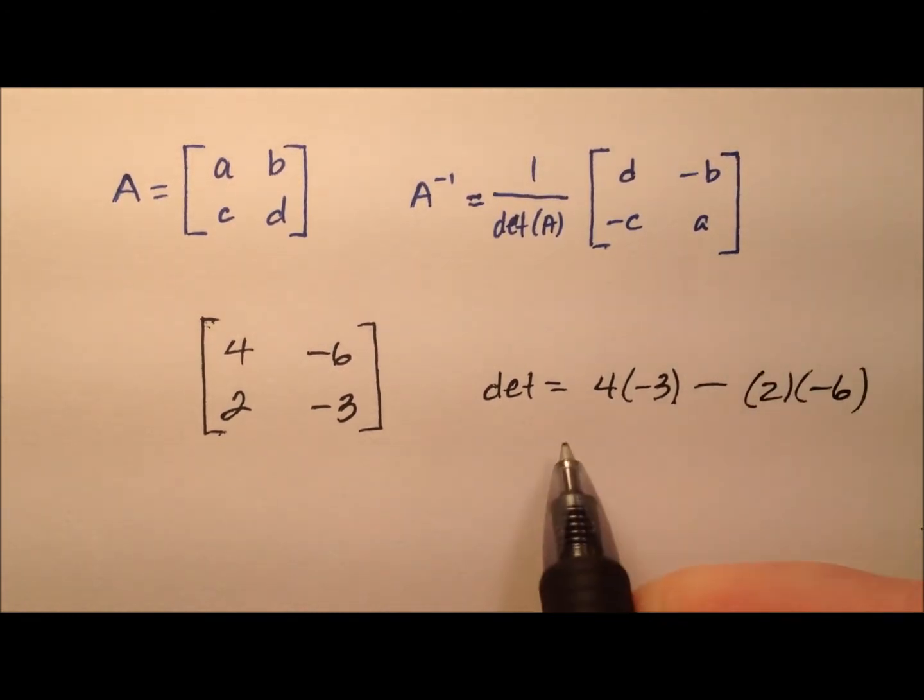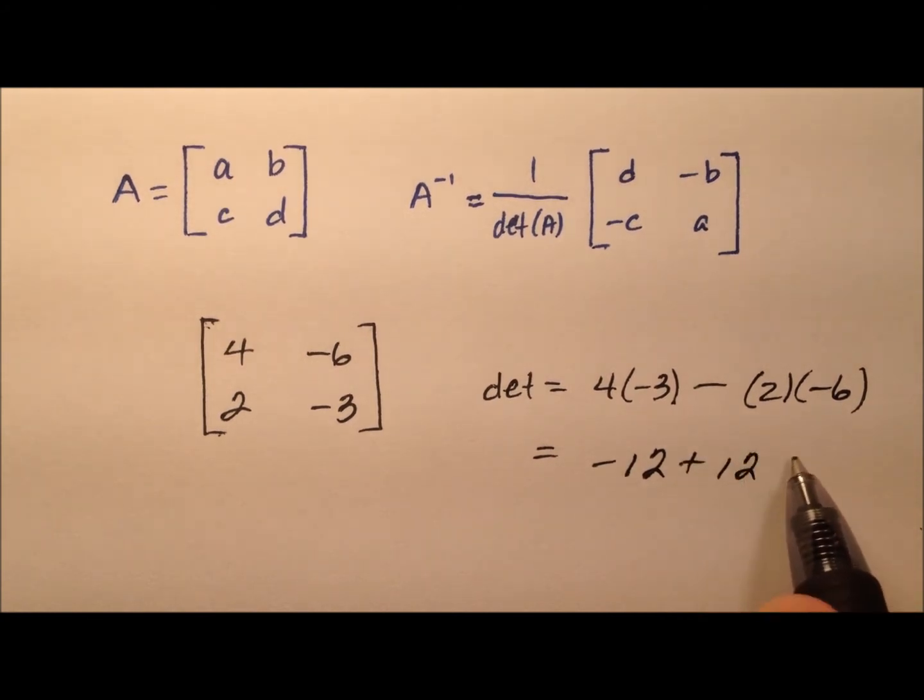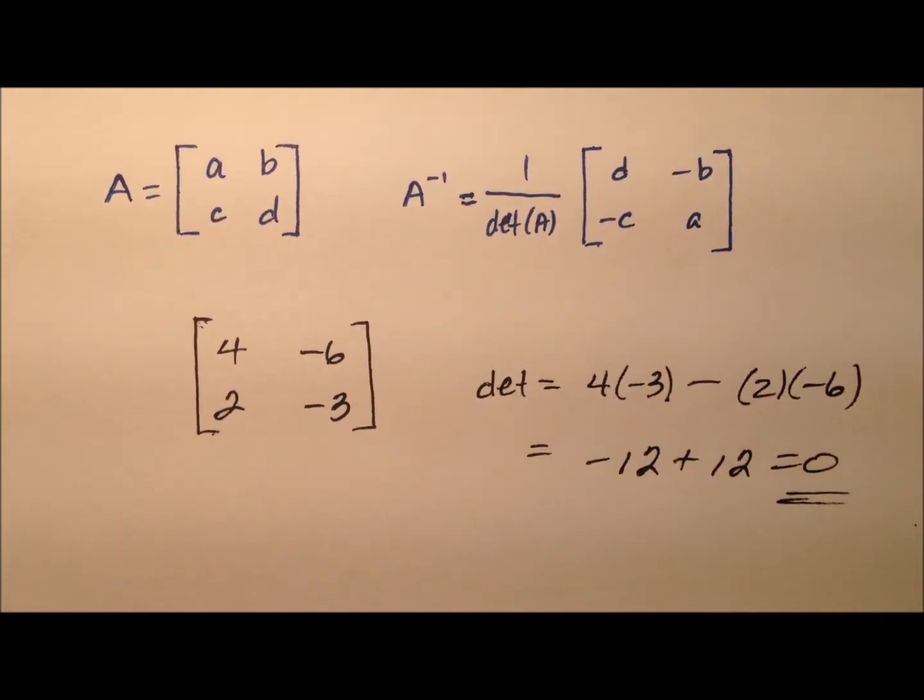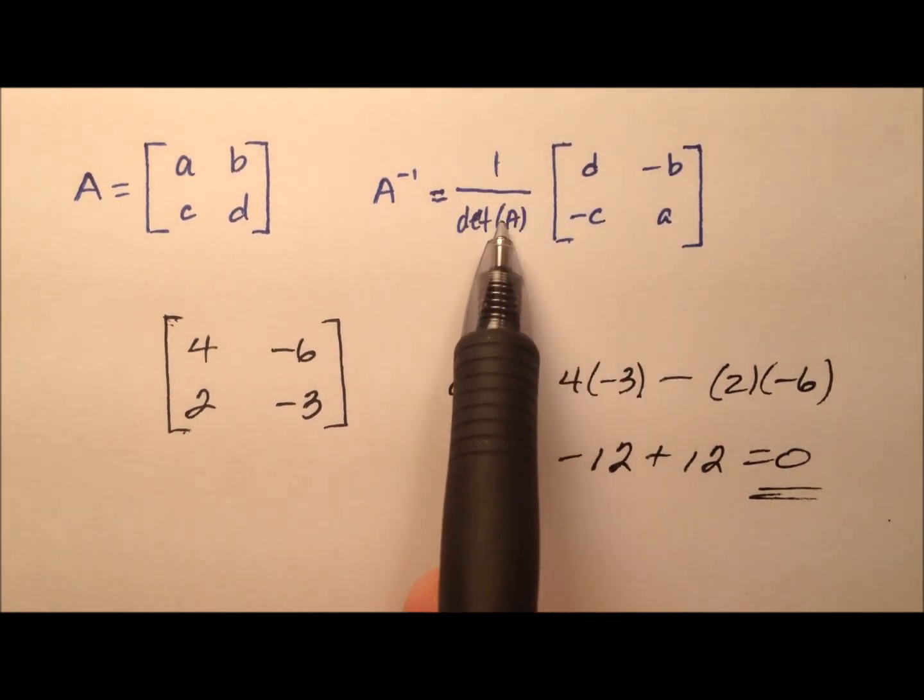So 2 times negative 6. And we'll see negative 12 plus 12 equals, uh oh, we have a 0 here, which means we'll have 1 over 0.